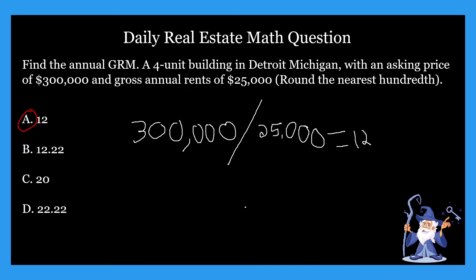It's as simple as that. When you're looking at these problems, there will sometimes be follow-up questions. Maybe it'll ask why 12 is important, or is 12 good. In some states, they might ask more hands-on questions like what does that 12 actually mean. Well, that 12 just means it would take 12 years in gross annual rents to pay off that $300,000.